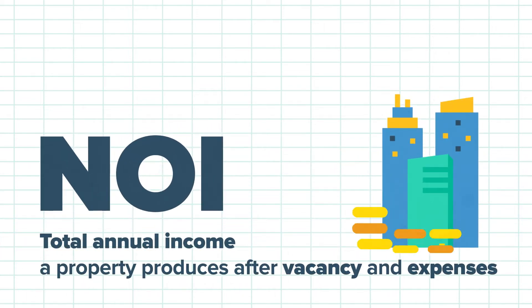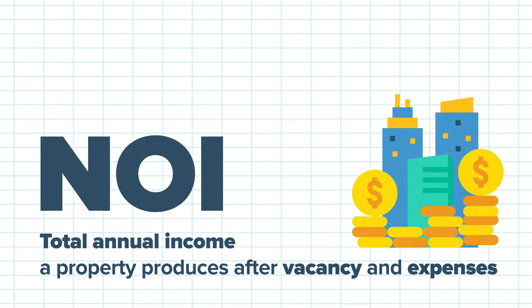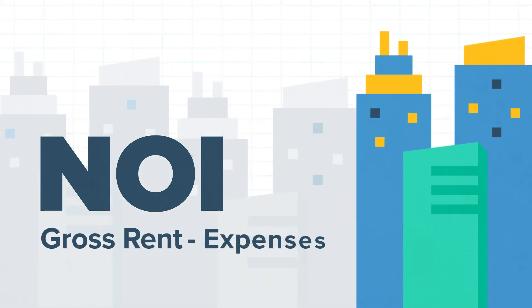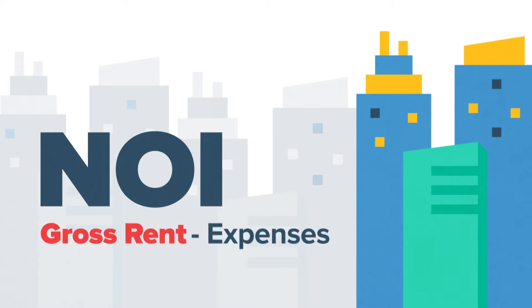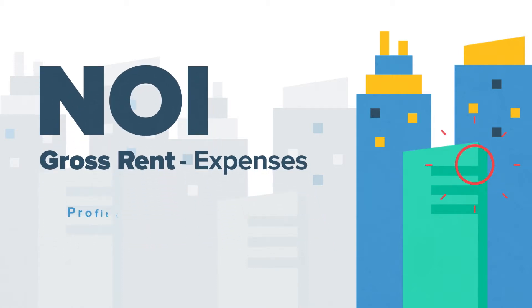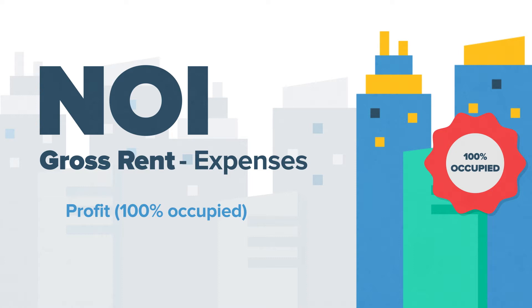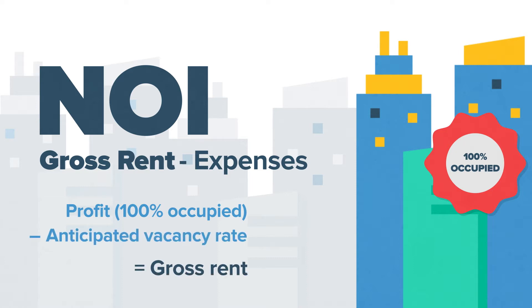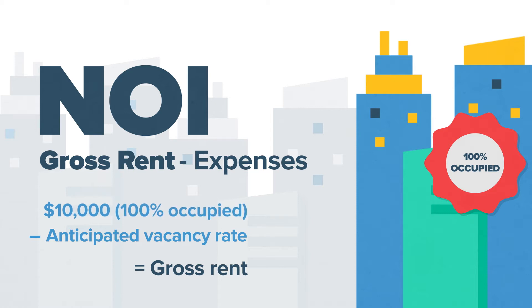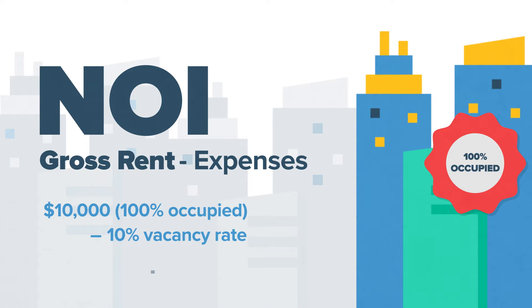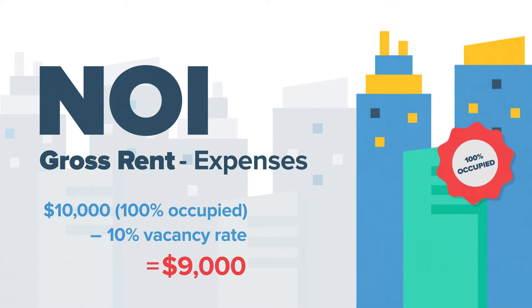In the real estate business, net operating income — also known as NOI — is the total annual income a property produces after vacancy and expenses. In other words, it's simply gross rent minus expenses. To determine the amount of gross rents, we start by considering what the subject property could generate in a perfect world if it was 100% occupied, then we subtract the anticipated vacancy rate. For example, if a property could generate a maximum of $10,000 per year but we expect a vacancy rate of 10%, then the most it can actually generate each year is $9,000.